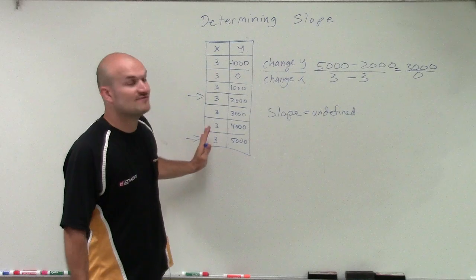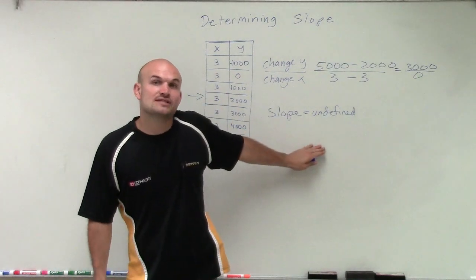So whenever you're looking at a table and you see that your x-values are unchanged, you're going to have a slope that is going to be undefined.